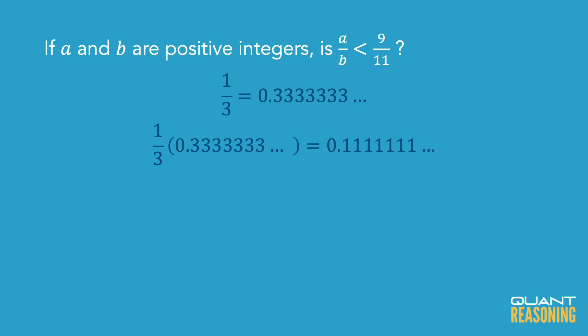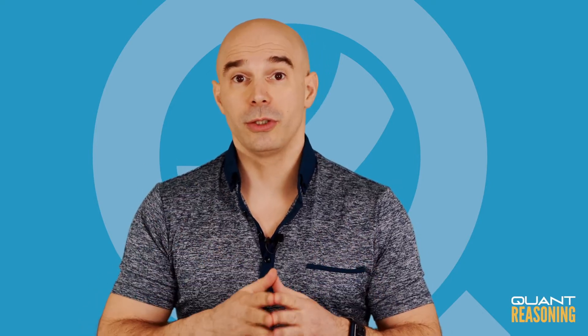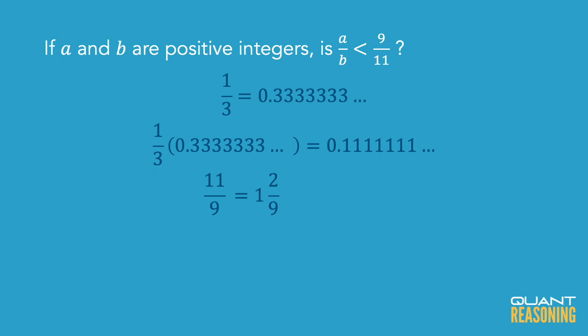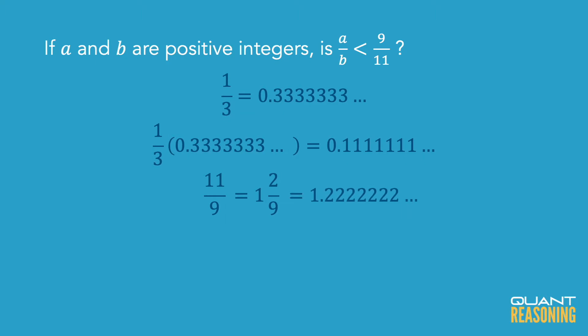When you look at 11 over 9 — this will be for statement 2 — 11 over 9 is like 1 and 2 ninths. I converted from an improper fraction to a mixed fraction: 9 goes into 11 once, and then there's a remainder of 2. So 1 and 2 ninths. And if 1 ninth is 0.11111, then 2 ninths is double that: 0.22222. So 1 and 2 ninths is 1.2222222 all the way to infinity. That's what 11 over 9 is.